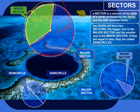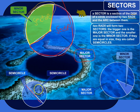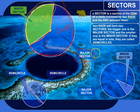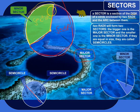You've got a major sector and a minor sector. Now, if the sectors are equal in size — like in this example, where this sector is just as big as this sector — then we would call these sectors semicircles. So those are sectors of circles: sections of the disc of a circle enclosed by two radii and the arc between them.